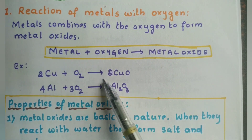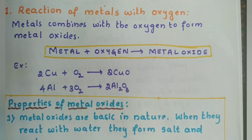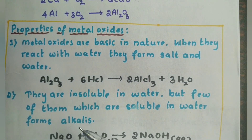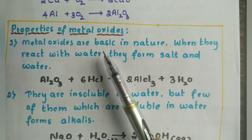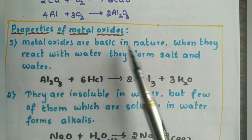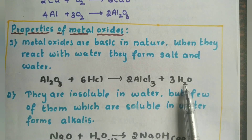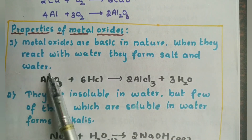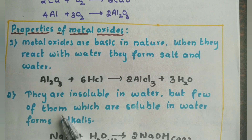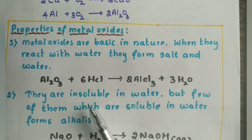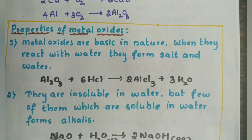What are the properties of these metal oxides? Metal oxides are basic in nature. We studied this in the acids and bases chapter — when they react with acids they form salt and water, which are neutral substances, so this tells us metal oxides are basic in nature. The next property: most metal oxides are insoluble in water, but some of them are soluble in water and are called alkalis. For example, sodium oxide reacts with water to form sodium hydroxide, and sodium hydroxide is alkaline.